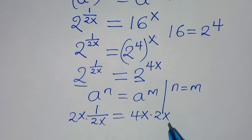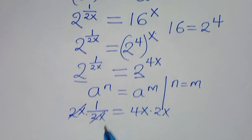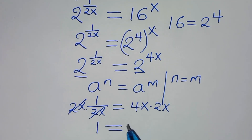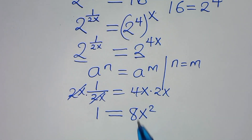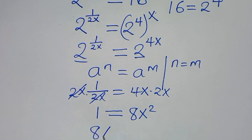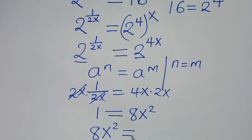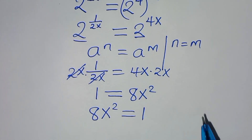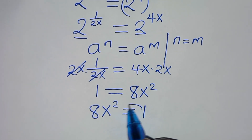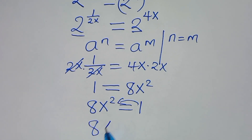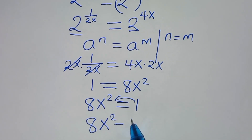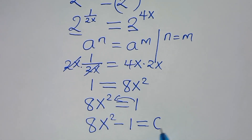So let's multiply both sides by 2x. Simplifying, we have 1 equals 4x times 2x, which gives us 8x squared equals 1. Taking everything to one side: 8x squared minus 1 equals 0.